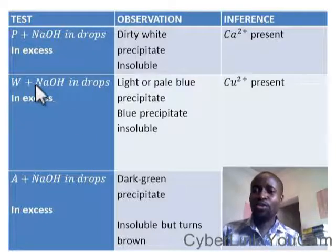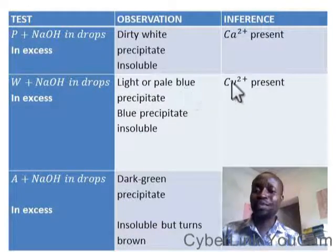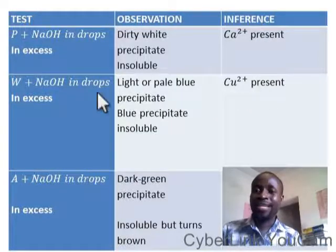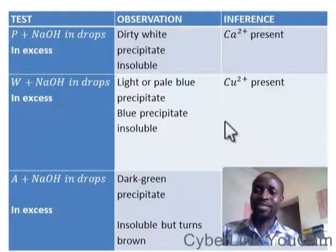Sample W plus sodium hydroxide in drops: if you have a pale blue precipitate, let your mind go to copper ion (Cu²⁺). In excess, the precipitate is insoluble — we are still talking about copper.